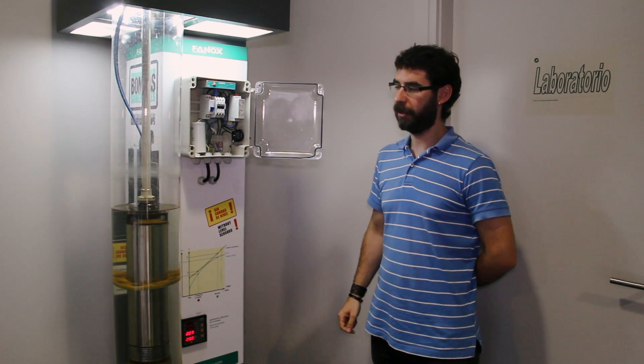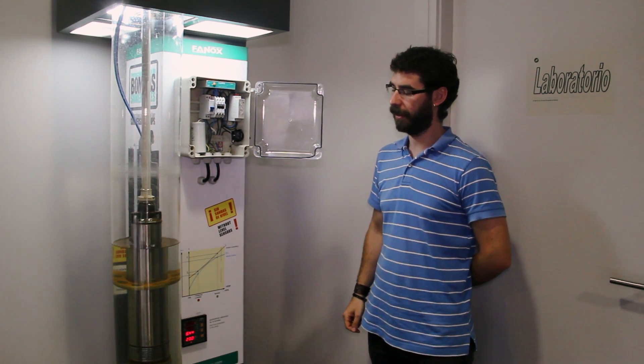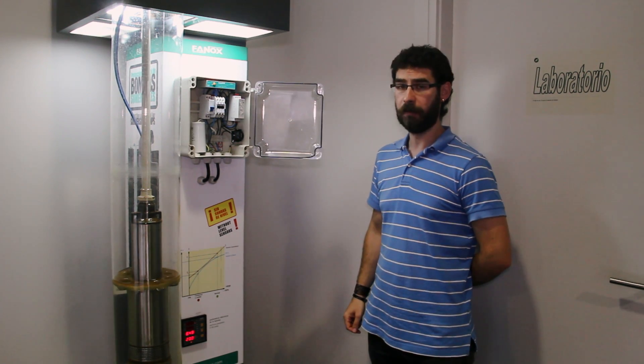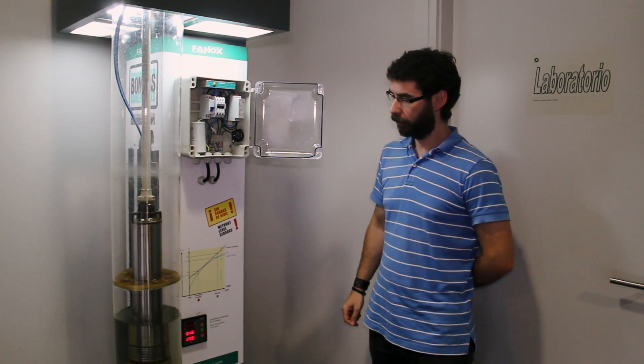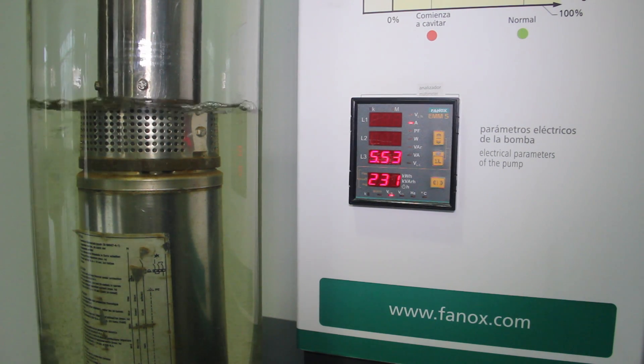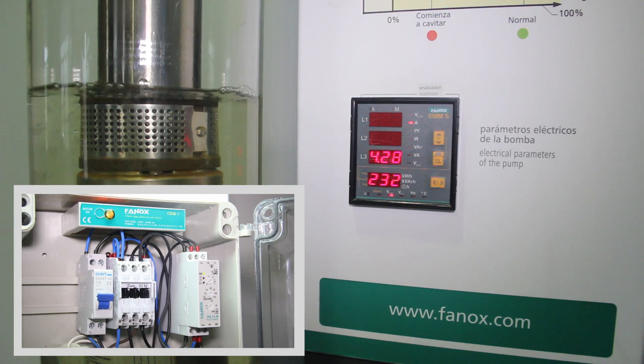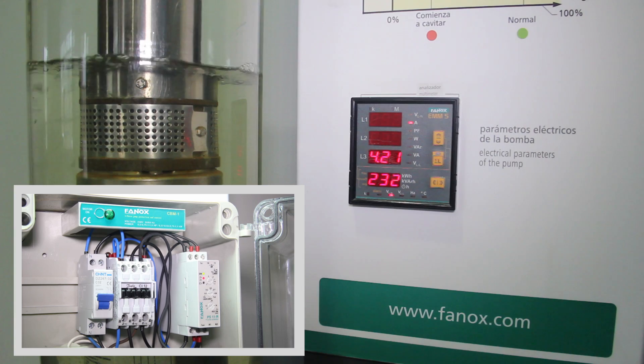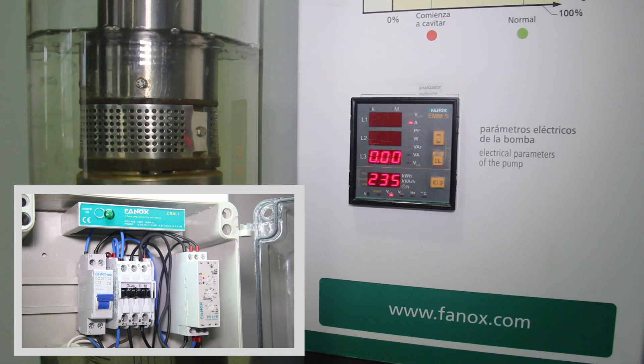We will see how the water level decreases gradually until the pump reaches the point in which it starts to work with no load. We will also see how the pump's consumption cuts down from 6.5 amperes to 4.2 amperes. When the relay detects this situation,